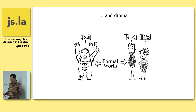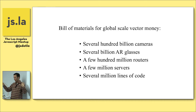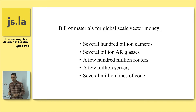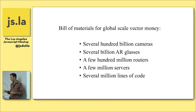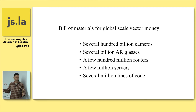So we've got these problems — we've got the drama. Let's fix it, and let's go big when we fix it. I don't like to criticize things without being constructive. I'd like to fix the whole problem we have with money by getting rid of it. So what's the bill of materials we need for a global-scale vector money economy? Several hundred billion cameras — I arrived at this estimate by saying about 100 cameras per person, scattered around home and office and public spaces. Several billion AR glasses for the several billion people on this planet, a few hundred million routers, a few million servers, and several million lines of code. No biggie. Actually, giant biggie — this is a moonshot project. To do this at a global scale would be a massive, massive undertaking.